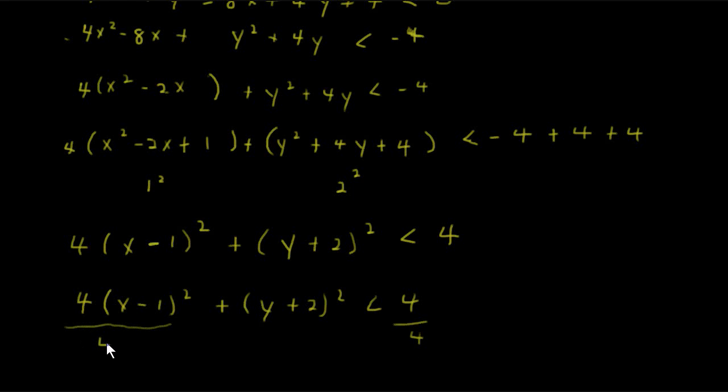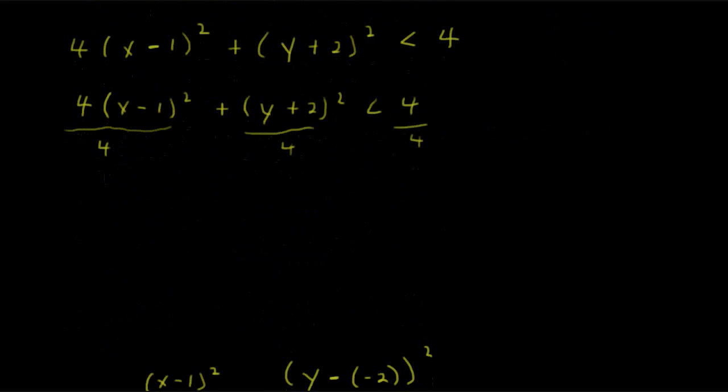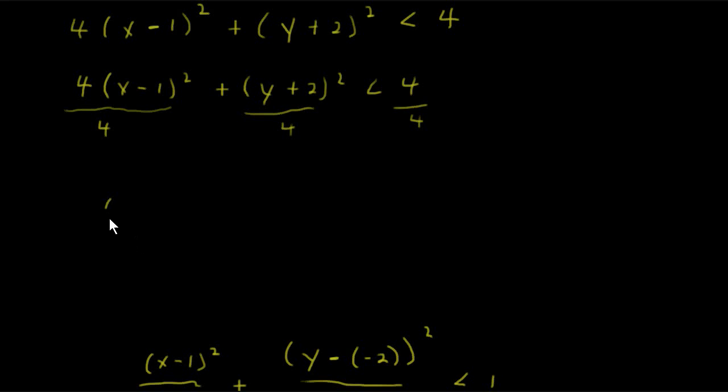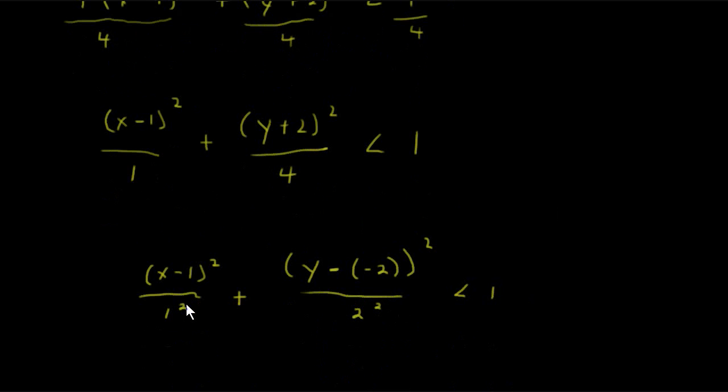And since 4 is positive, we'll just keep the inequality symbol the same because we're dividing by a positive number. And simplifying, we get (x - 1)²/1 + (y + 2)²/4 < 1, and 4 divided by 4 is the 1 that we wanted. And then we can rewrite this as that 1 is 1², the 4 we can rewrite as 2². And y + 2, we can rewrite that as y - (-2) just to make it fit the form better, the standard form.